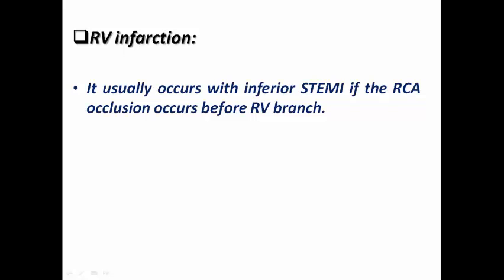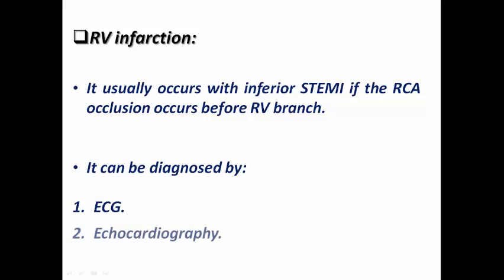RV infarction usually occurs with inferior STEMI if the RCA occlusion occurs before the RV branch. It can be diagnosed by ECG or by echocardiography, because echocardiography can show the right ventricle and helps us assess RV function. However, since we are in the ECG course, we are focusing on ECG only.